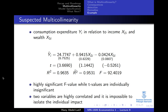Let's model consumption expenditure Y in relation to income X2 and wealth X3. Intuitively, income and wealth will be correlated. Looking at the regression results: the F-statistic is very high, meaning the model is very significant overall. The R-squared and adjusted R-squared show 96% and 95% of the variation explained by the model. Yet at the same time, looking at the individual coefficients for X2 and X3, the T-ratios are very small — meaning these two variables are not individually significant.